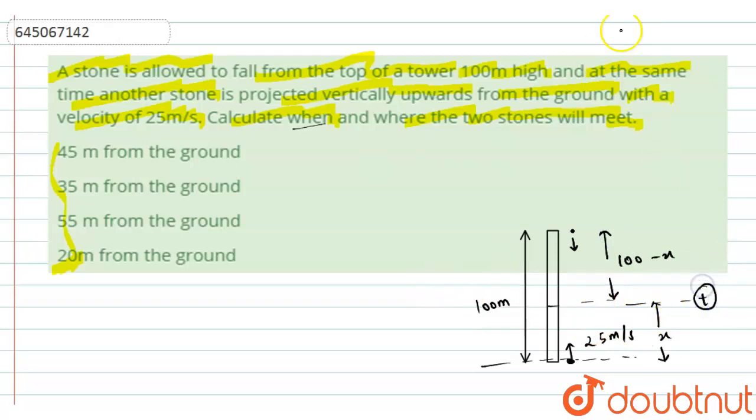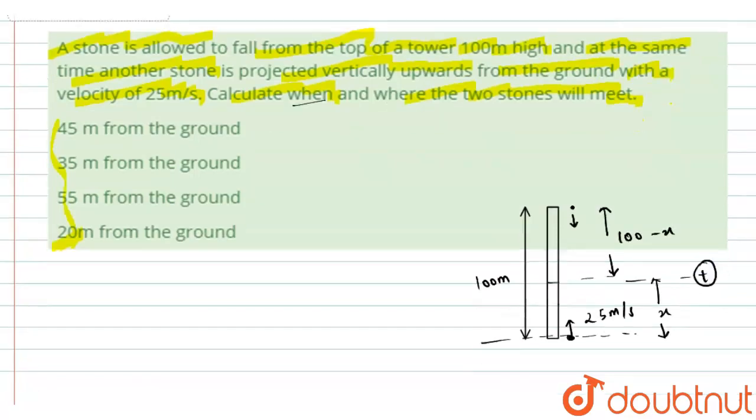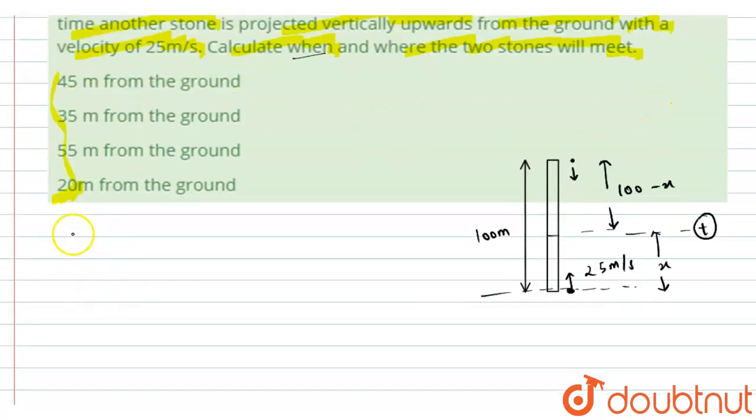Let's say they are meeting after t time, so now we are writing for the first stone, that is this upper stone which is performing the downward motion. So we have the equation as s equals ut plus half at square.